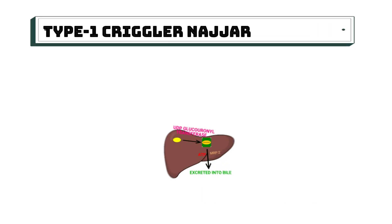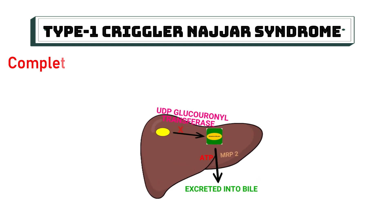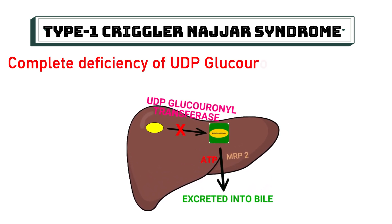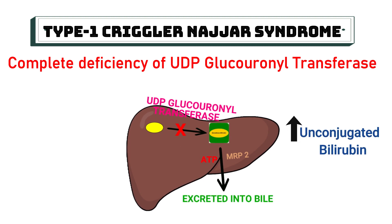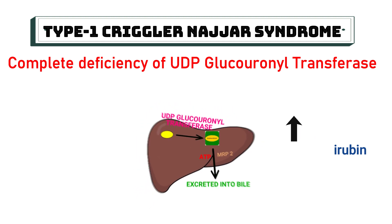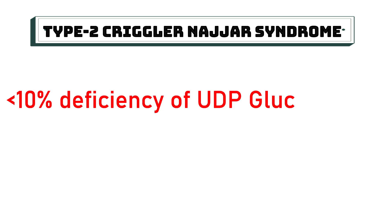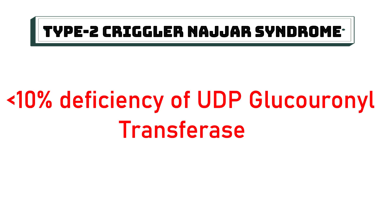Type 1 Crigler-Najjar syndrome is due to the complete deficiency of UDP-glucuronosyltransferase enzyme. Hence, it results in increased unconjugated bilirubin. Type 2 Crigler-Najjar syndrome is due to less than 10% of the enzyme being present in the liver.